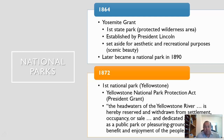The first state park and protected wilderness area was actually here in California — it was Yosemite Grant, which would later become Yosemite National Park in 1890. It started as a state park and was named after President Grant.